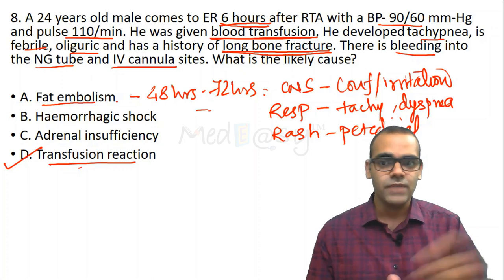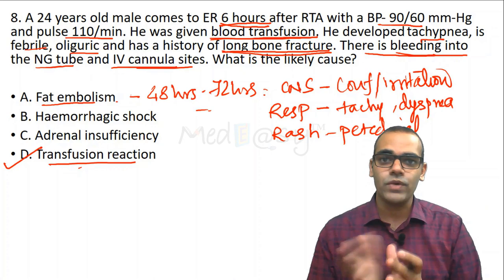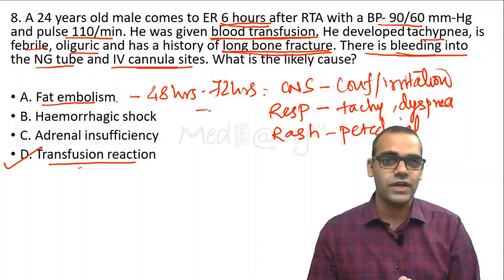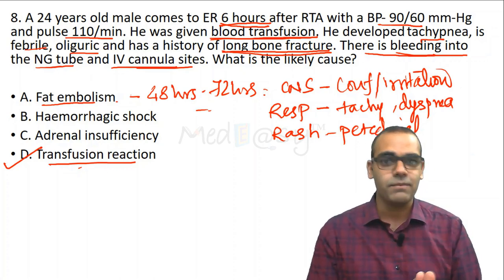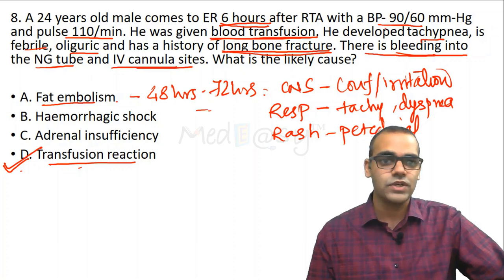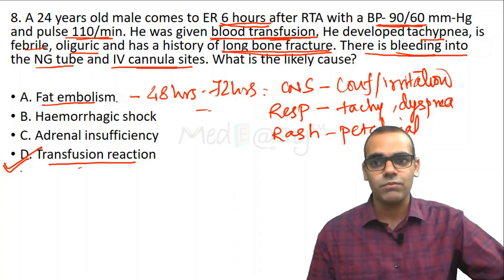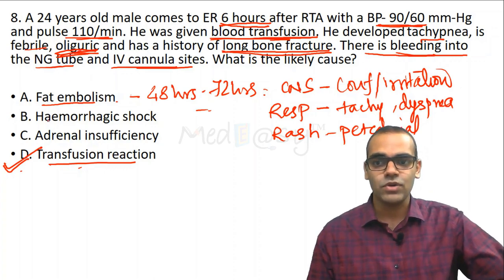In fat embolism there will be no bleeding — however, this patient has bleeding into the nasogastric tube and IV cannula sites, which goes against fat embolism. The timing (6 hours) is also against fat embolism. The transfusion reaction fits all the keywords: fall in BP, high pulse, history of blood transfusion, tachypnea, oliguria. The earliest sign of transfusion reaction is renal shutdown — decreased urine output. So the answer is blood transfusion reaction.